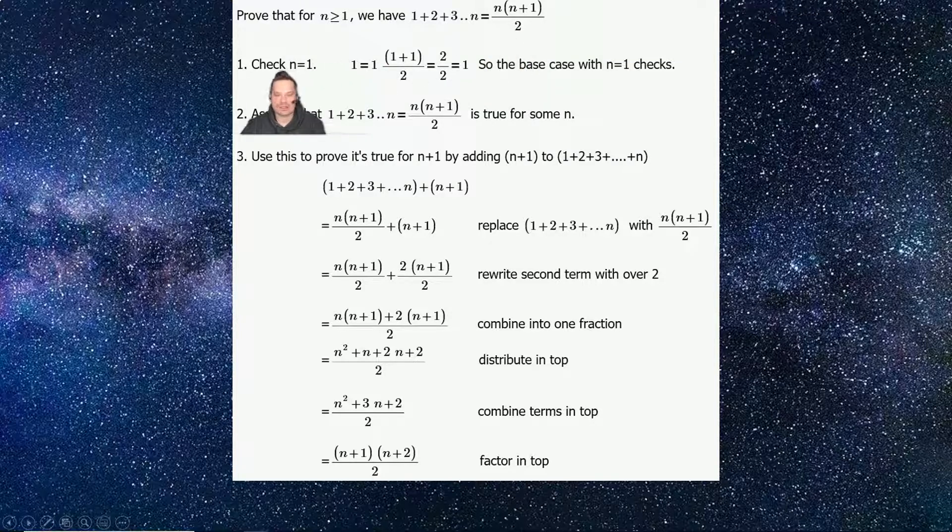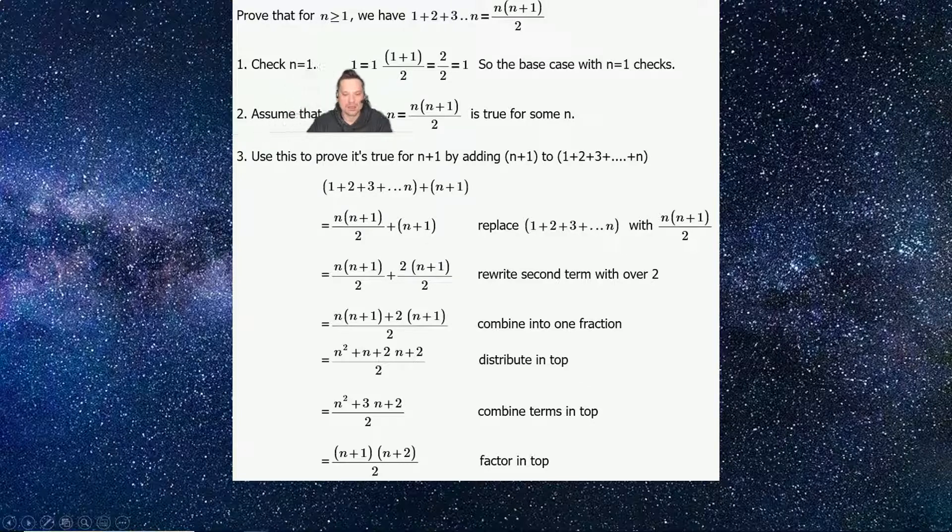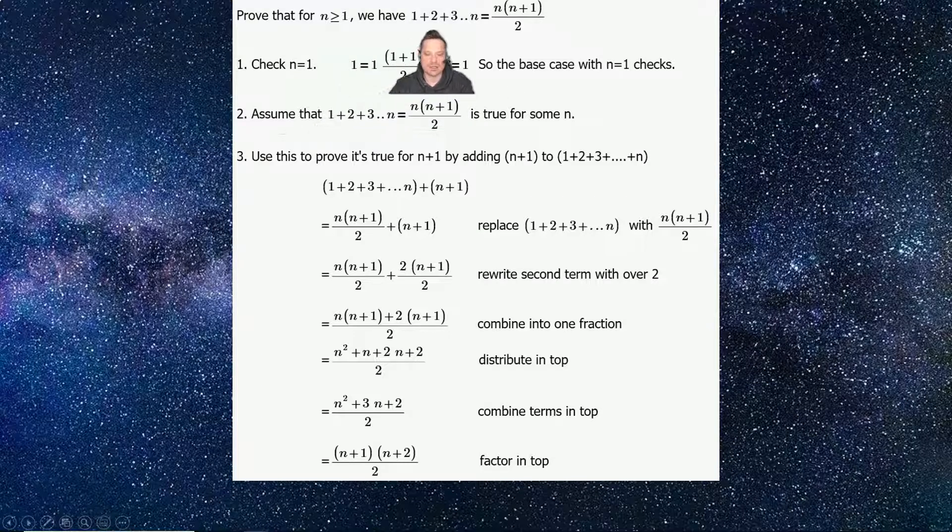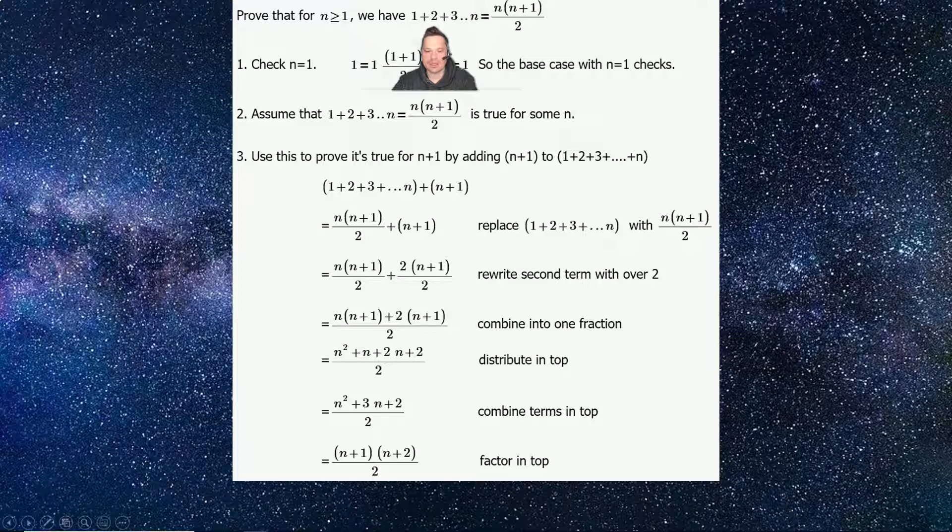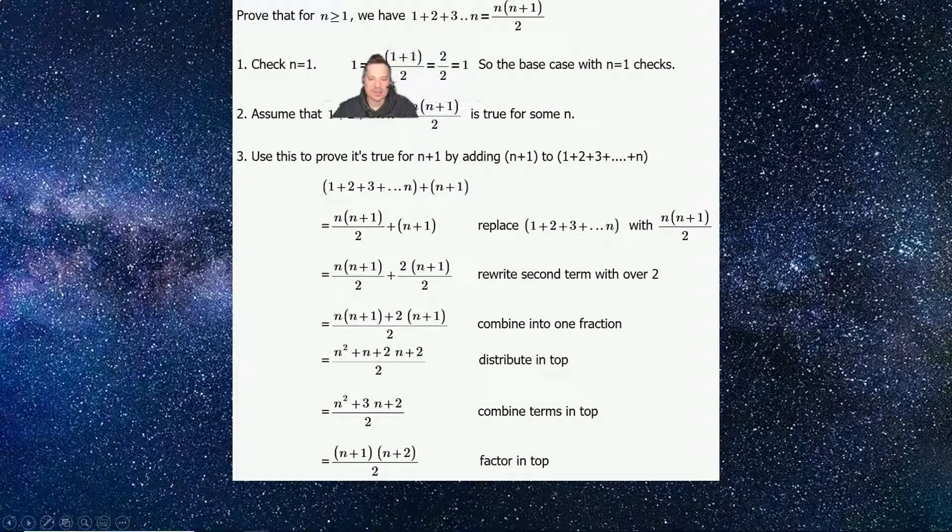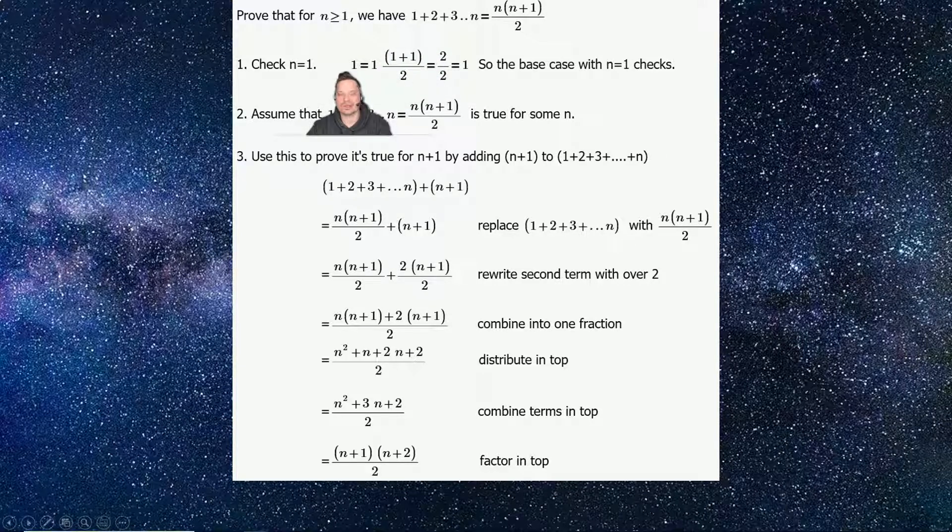First, you're going to need to check the base case. What does that mean? That basically means you set n equal to the value of 1. So on the left side, you're going to end up with 1. Why is there a 1 on the left side above my head? Because back in this formula, you no longer have the 2 and the 3. All you have is just that first 1, and that's it. It's just n equals 1. So that's why here above my head, it's 1 exactly.